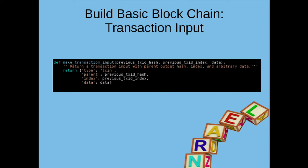We're going to look at our first bit of code. Here we're defining a function called makeTransactionInput. The important parts are that it will receive a previous transaction ID hash, a previous transaction ID index, and some blob of data, which we'll talk about in depth more.